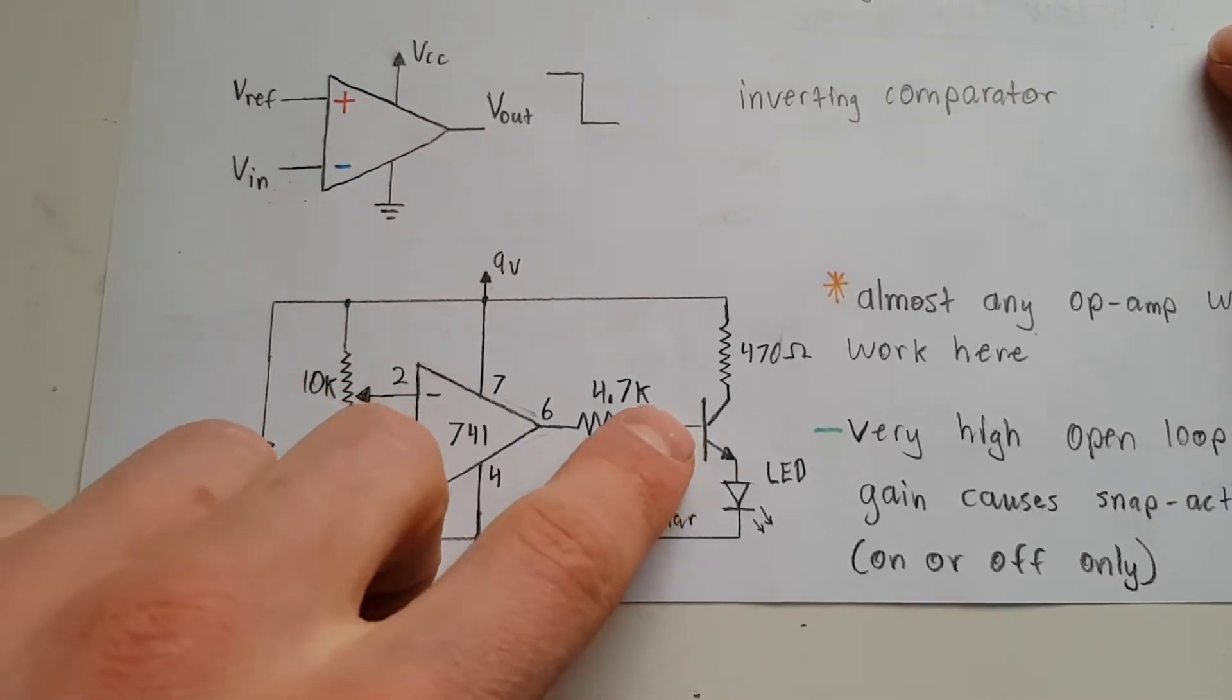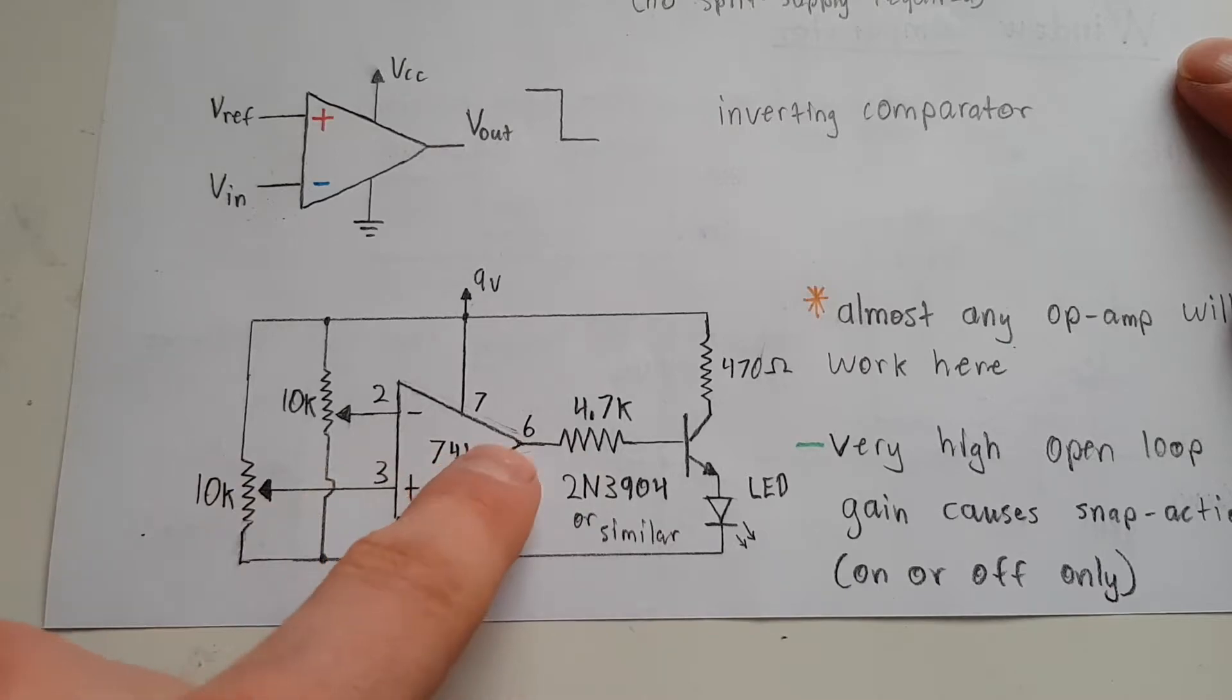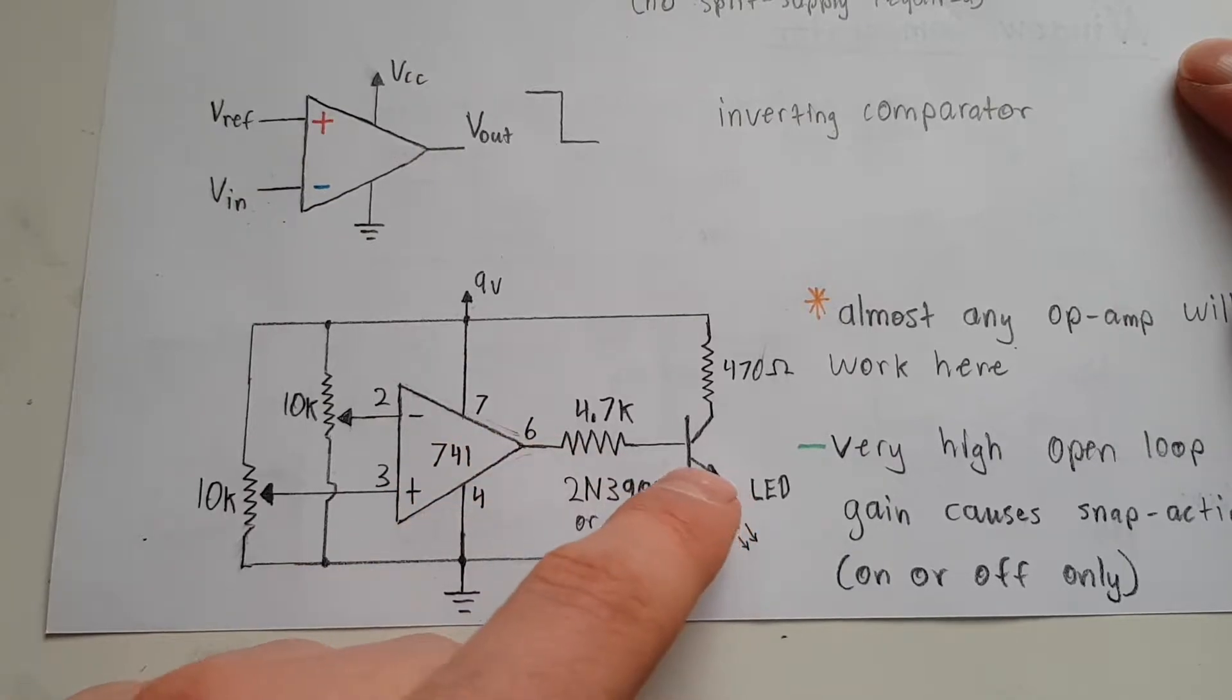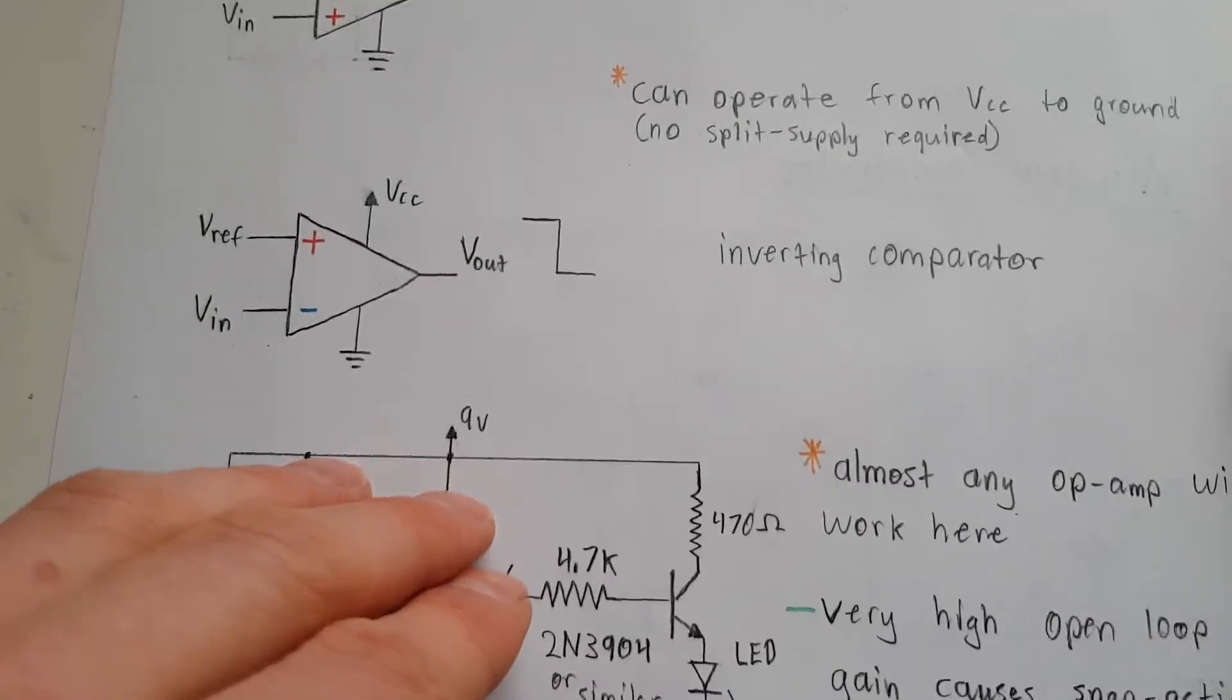And of course this device right here is a transistor. It's basically buffering the output of the op-amp. The op-amp may not, depending on the op-amp, may not be able to drive the LED directly with enough current, but a transistor can surely source enough current to drive it to a level to where you can see it.